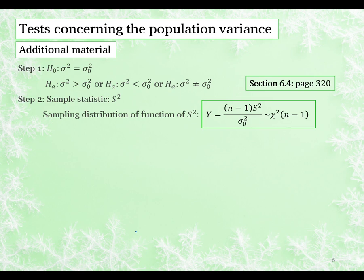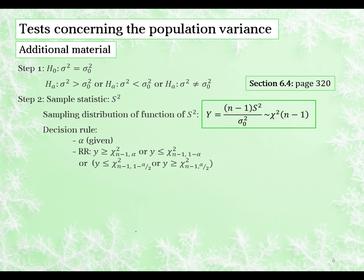This is on page 320 — please refresh yourself if you cannot remember all of it. In chapter 6 we found that this statistic has a chi-squared distribution with n minus 1 degrees of freedom, provided that our original observations were sampled from a normal distribution. Our decision rule will depend on the value of alpha, which if not given you can assume is 0.05, and our rejection region will be defined according to the chi-squared distribution.